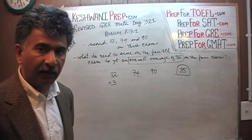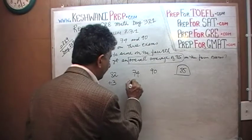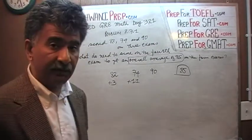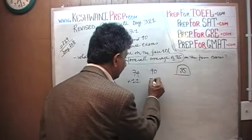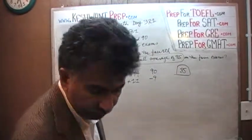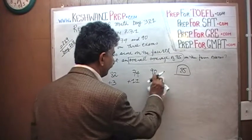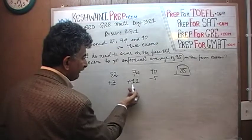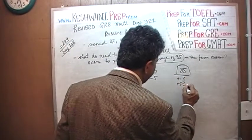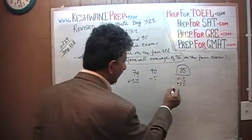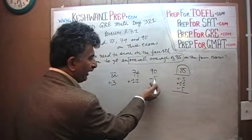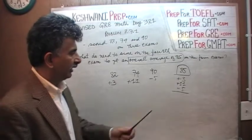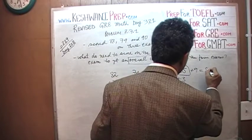How short are we on the second exam? Our goal was 85, so we have to make up 11 points — we are 11 points short. On the third exam, it turns out we had a surplus of 5 points. So: 3 plus 11 is 14, and 14 minus 5 is 9. We need to do 85 plus 9, which is 94.